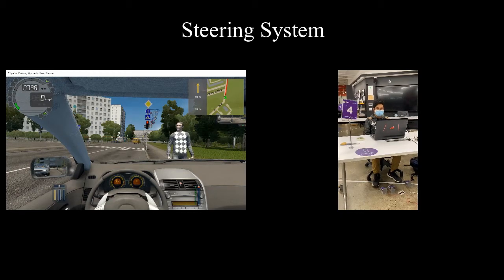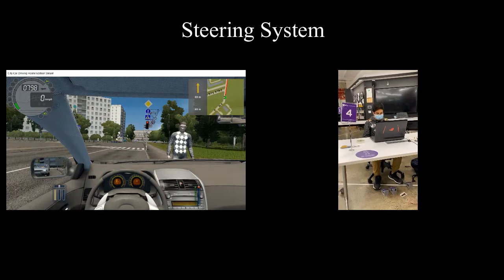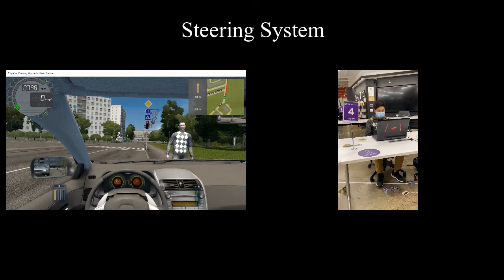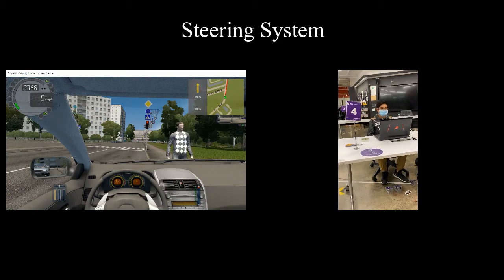Now amputee Jose will demonstrate the driving system. Press shift, which will calibrate the accelerometers. Press brake, press gas.